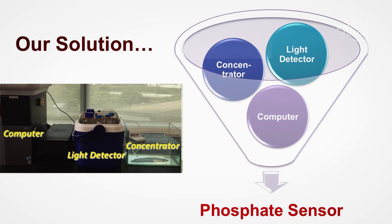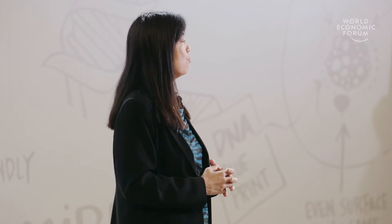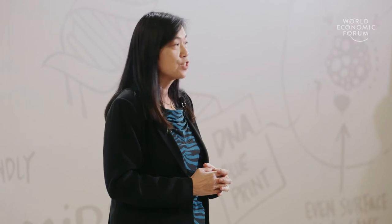Enter our solution. Here, we put together three key components: a concentrator to concentrate the phosphorus from the environment, a light detector to sense and quantify the amount of phosphorus, and a computer to collect the data for further processing and wireless transmission. Now, we have a compact, real-time phosphate sensor.